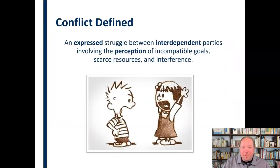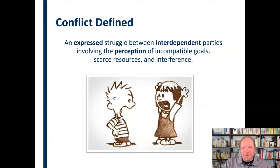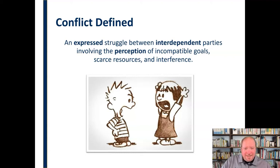So let's start by looking at what conflict is. Conflict is an expressed struggle between interdependent parties involving the perception of incompatible goals, scarce resources, and interference. When we talk about interpersonal conflict, first of all, it has to be an expressed struggle. If only one person is aware of it, it's just one person being upset — it's not conflict. In conflict, both people are aware of and engaged in this struggle.